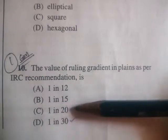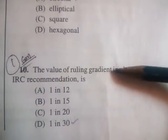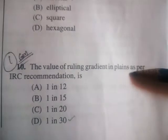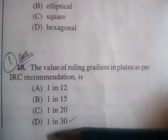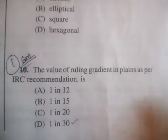Next question: the value of the ruling gradient in plains as per IRC recommendation is — 1 in 12, 1 in 15, 1 in 21, or 1 in 30? The correct answer is 1 in 30.